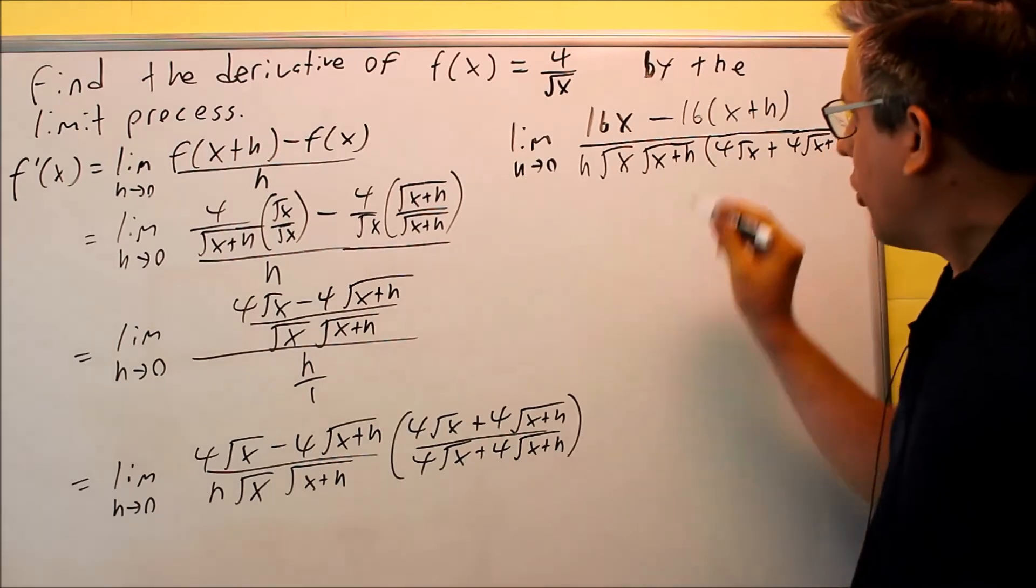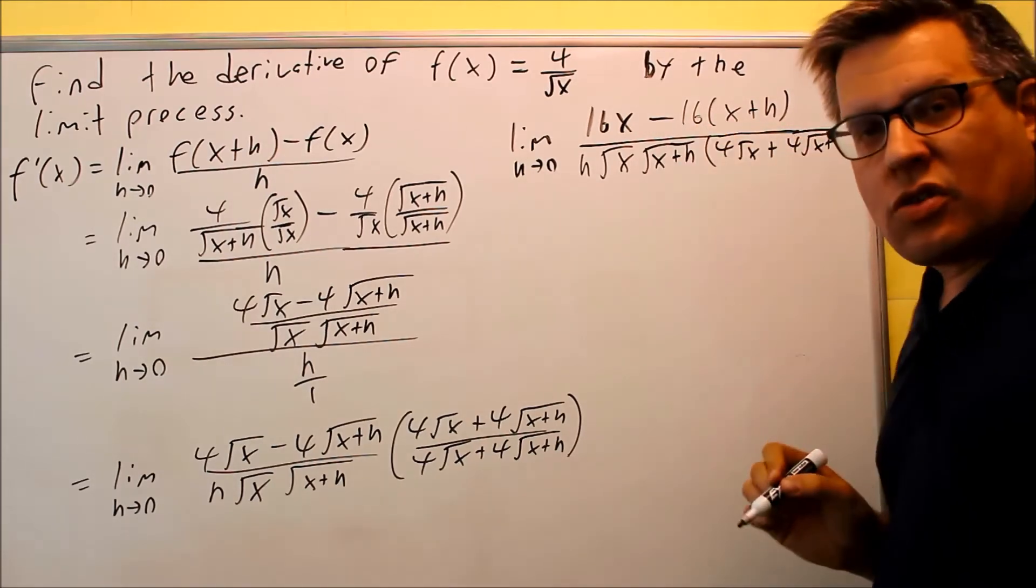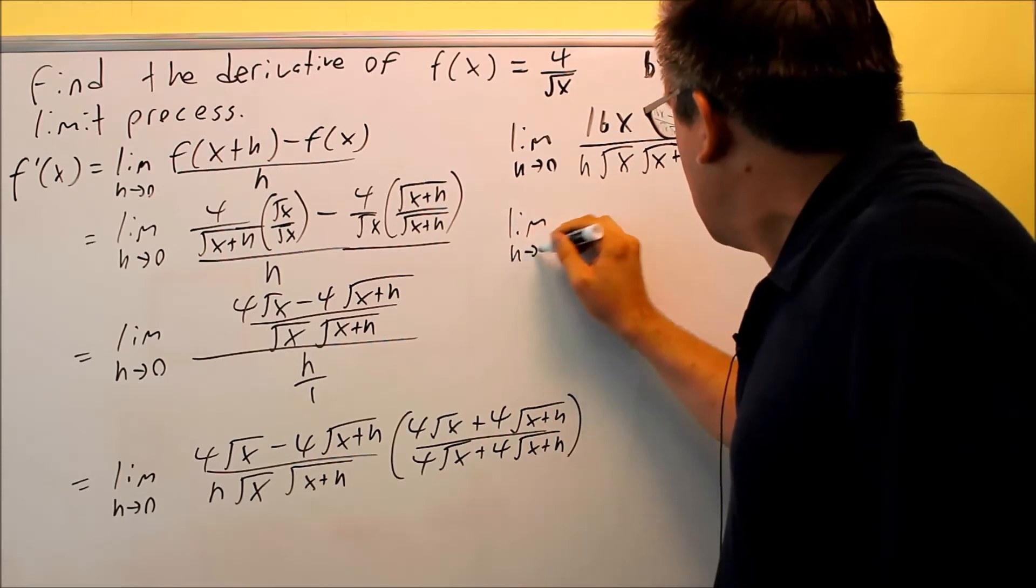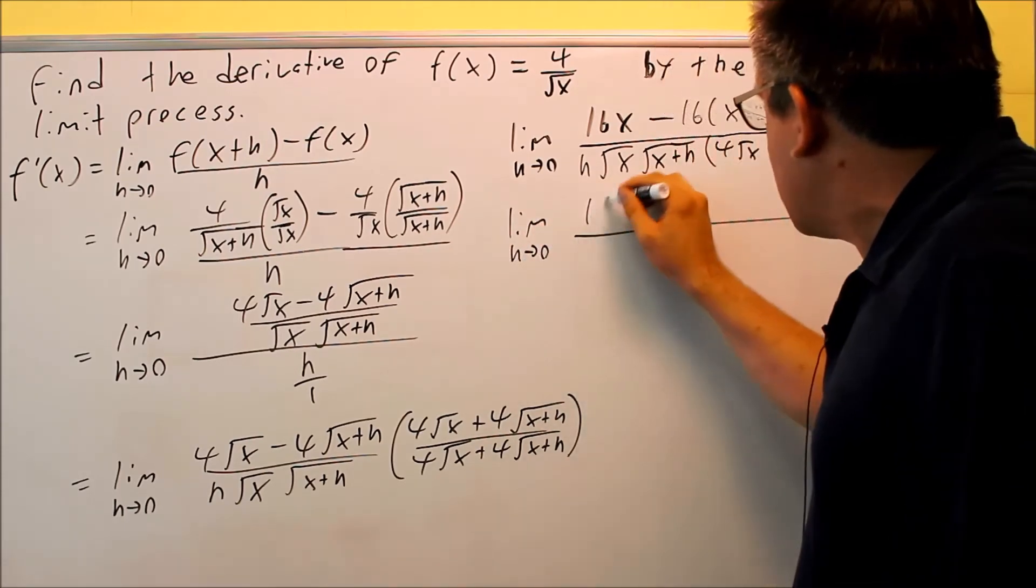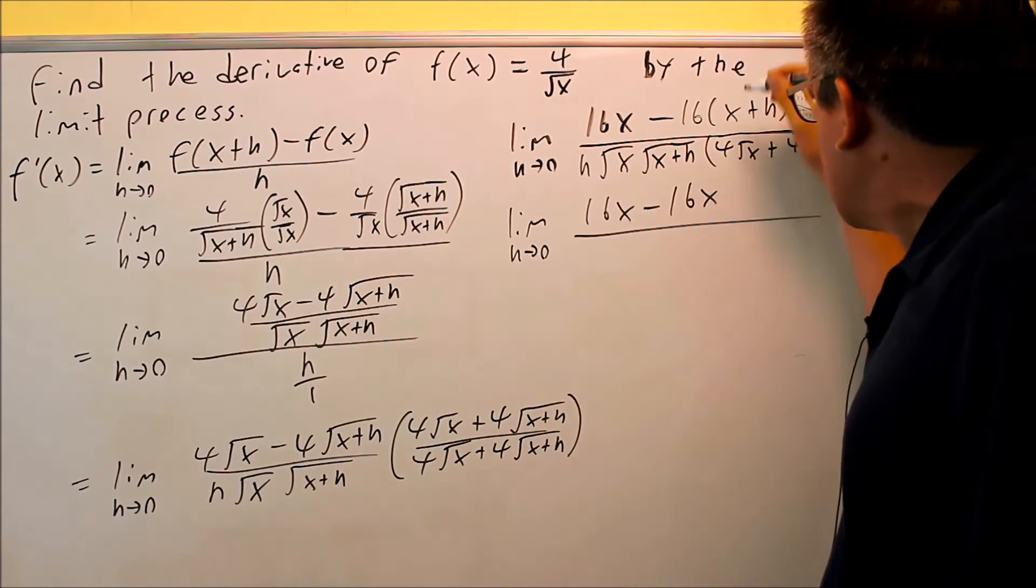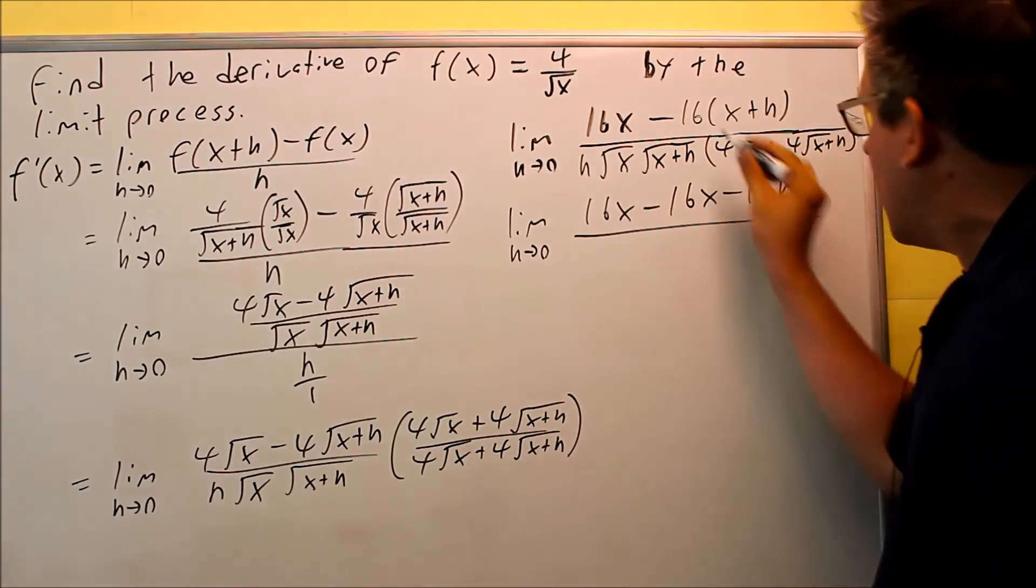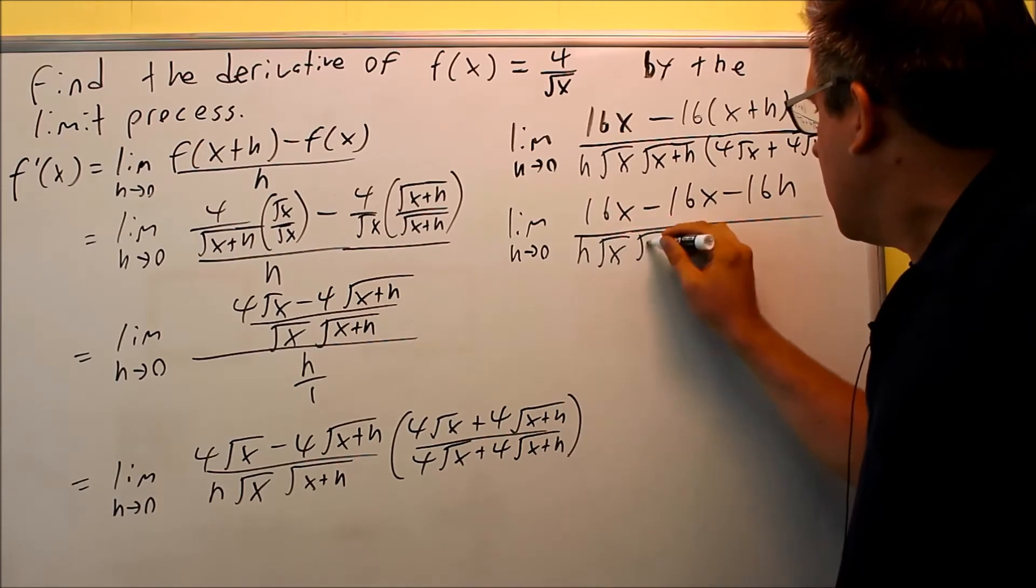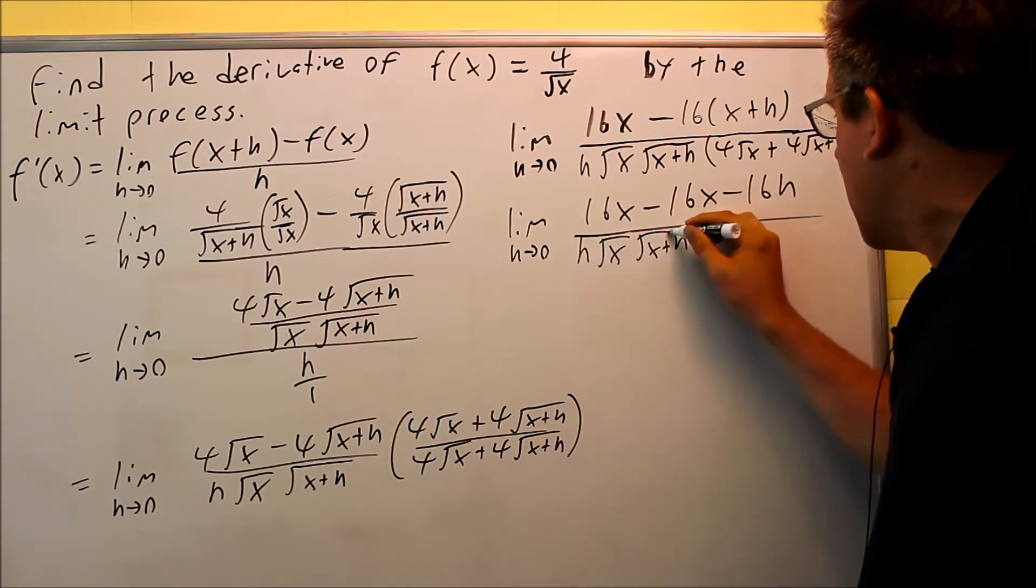Let's keep on going. We're going to now distribute the 16 through this. So we're going to do 16x minus 16x minus 16h. So again, you're distributing that through. The bottom doesn't change, so we're writing all this out again.